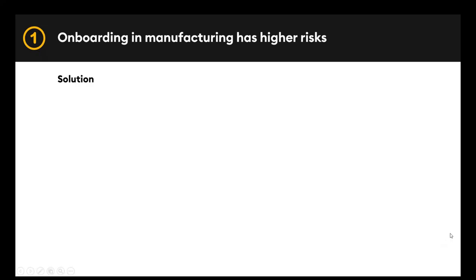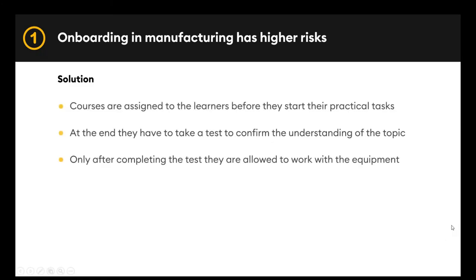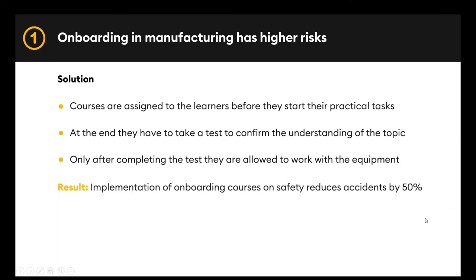The first challenge was that mistakes in training can lead to risks in the health and safety of a new hire. Our solution is simple: we design a course on hygiene and safety, upload it to the LMS, and assign it to learners before they start performing their tasks. At the end of training, they take a test to confirm understanding of the topic. They will only be allowed to work with equipment under mentor supervision after completing the test. According to our clients, this helped them reduce accidents by 50%.